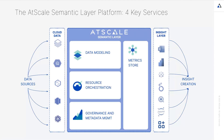The AppScale Semantic Layer Platform has four key services. It sits between your data consumption tools and personas on one side, and your cloud data platforms on the other. The metric store provides that business-friendly interface that puts technical data in business terms. A data modeling tool lets data stewards translate physical data into something more approachable, creating a semantic model. The platform also tunes and speeds queries automatically to the speed of thought, and provides governance like row-level security, column-level security, and masking.